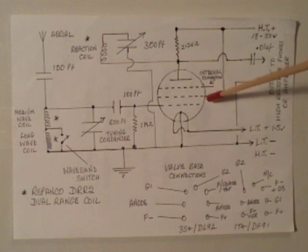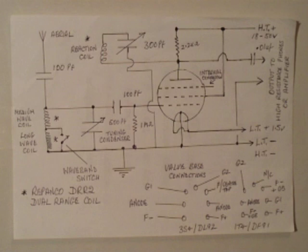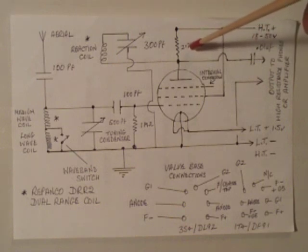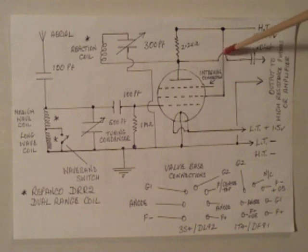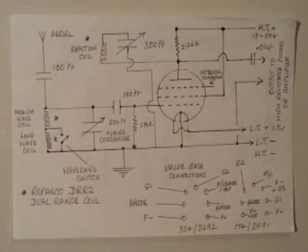The screen grid of the valve is connected to the HT line which in this case is quite low. 18 to 50 volts is all you need. Don't need any more than that. The anode is connected to the HT line via a 2.2k load resistor and the audio output is taken from the anode pin via a 0.01 capacitor. You can feed that into your amplifier or you can feed it into high resistance headphones or telephones. They have to be high resistance around about 2k or you'll need an output transformer to match it. But if you're feeding it into an amplifier you've got no problem at all. The other end of the amplifier input of course goes to earth.